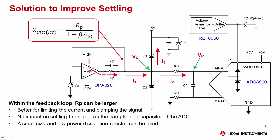As you can see on the slide, the improved solution places the protection resistor within the amplifier's feedback loop. Under normal operating conditions, the output resistance of the improved configuration is the current limiting resistor RP divided by 1 plus beta times AOL. Since AOL is very large, the effective impedance is substantially reduced, and even large protection resistors do not impact the ADC settling behavior.